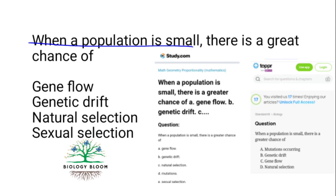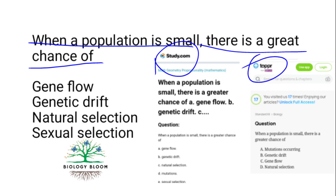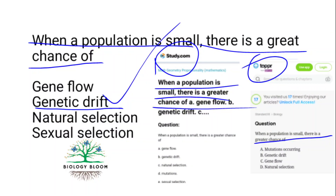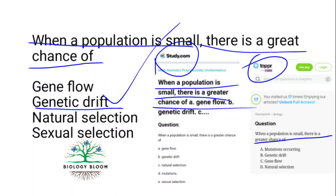When a population is small, there is a great chance of genetic drift — taken from study.com as well as Topper as it is. When a population is small, there is a greater chance of genetic drift due to the limited gene pool, which can cause changes in allele frequencies more quickly than in larger populations.